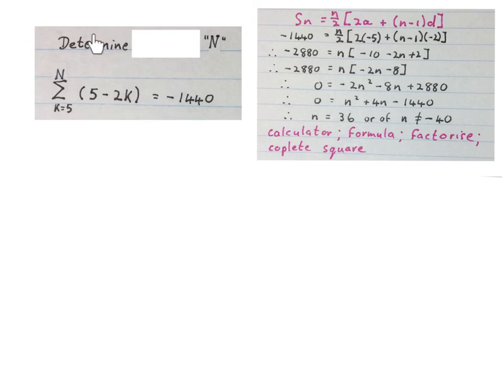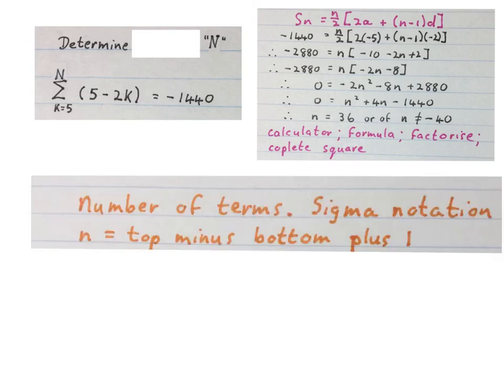Remember they ask us to determine the value of n, that value up there. Like we said in the beginning of the video, to find the number of terms n in sigma notation, this n is found by taking the top minus the bottom plus one. So that n, the 36, is that n over there minus that five plus one.